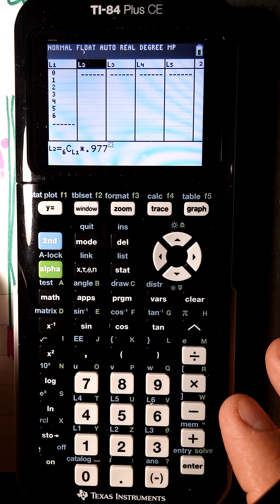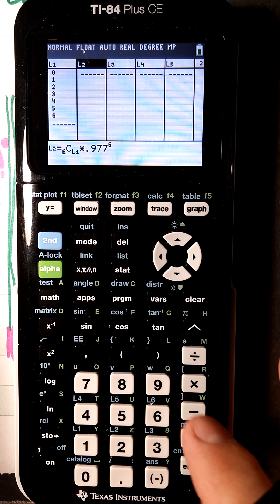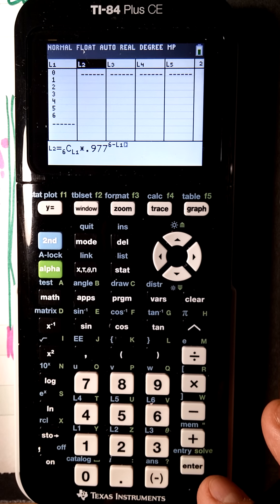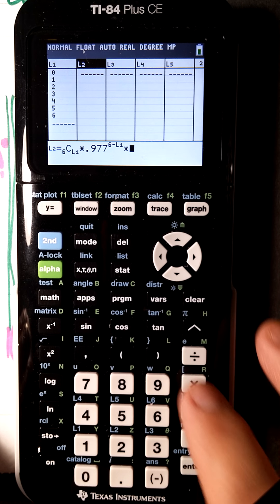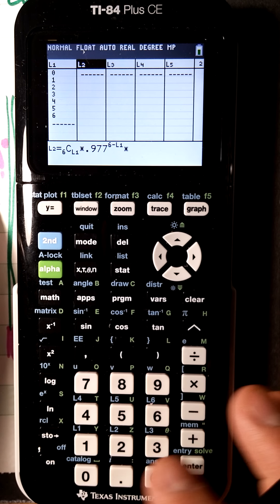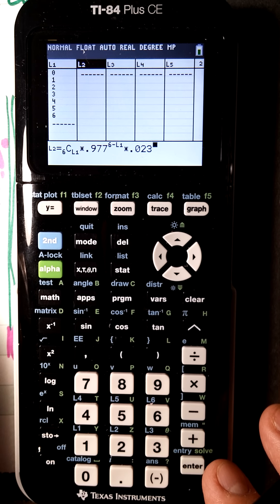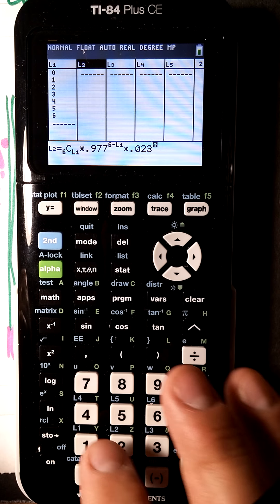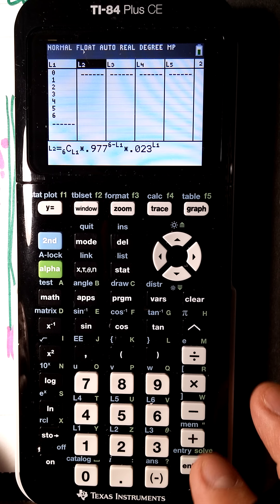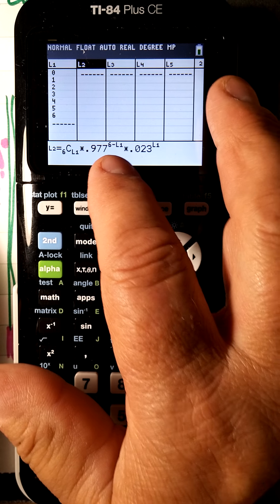Now we want this to go 6, 5, 4, 3, 2, 1, so we want this exponent to be 6 minus L1, because then it'll be 6 minus 0, 6 minus 1, 6 minus 2, times the 0.023. It'll fill all that in lickety-split when you press enter and this then will be 0, 1, 2, 3 which is just L1. This is the 6C0.